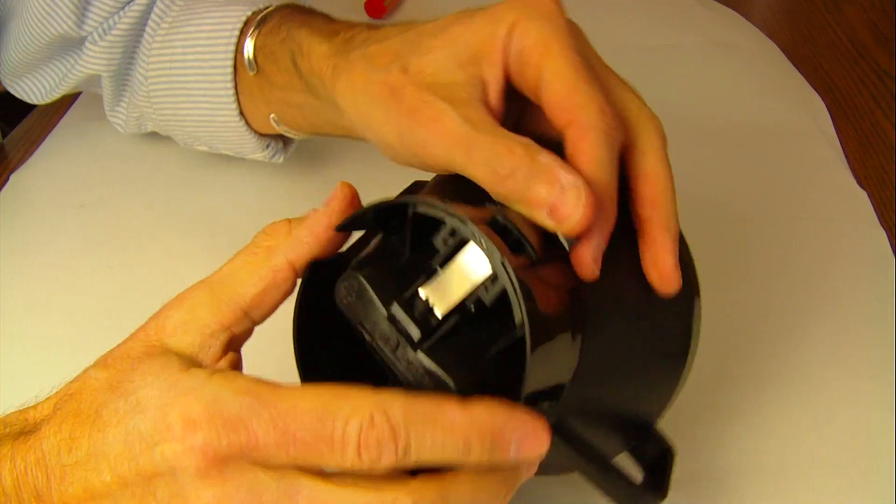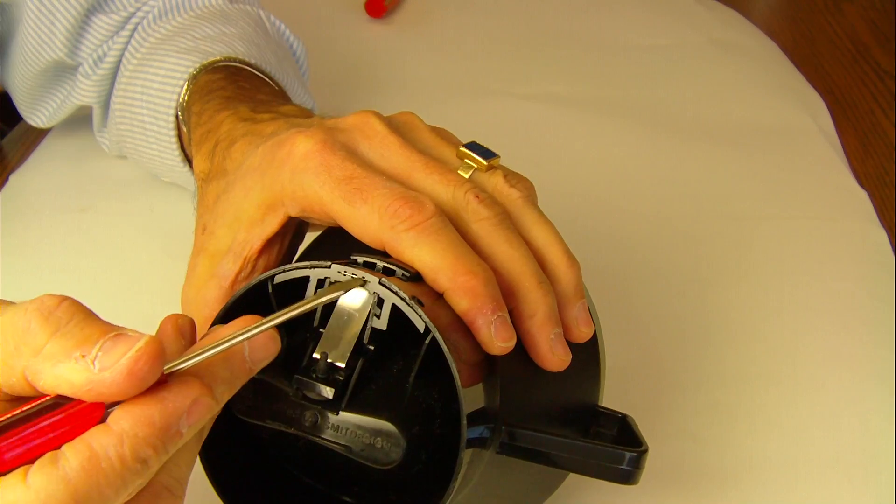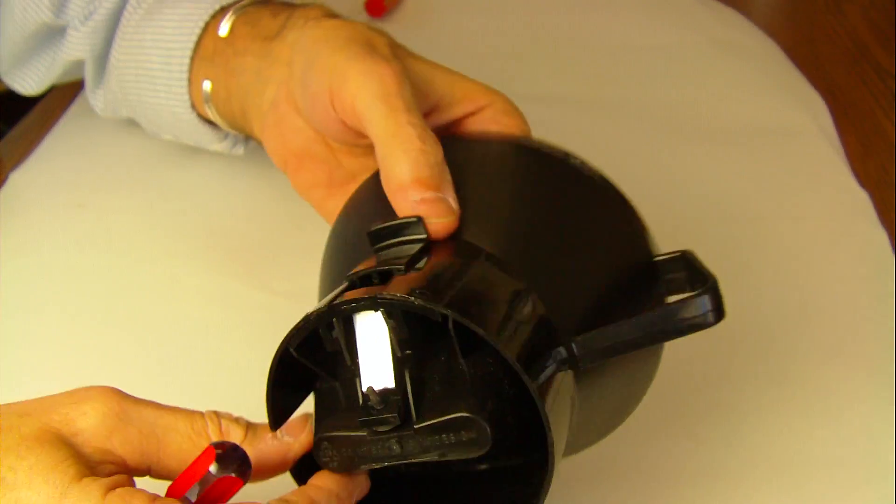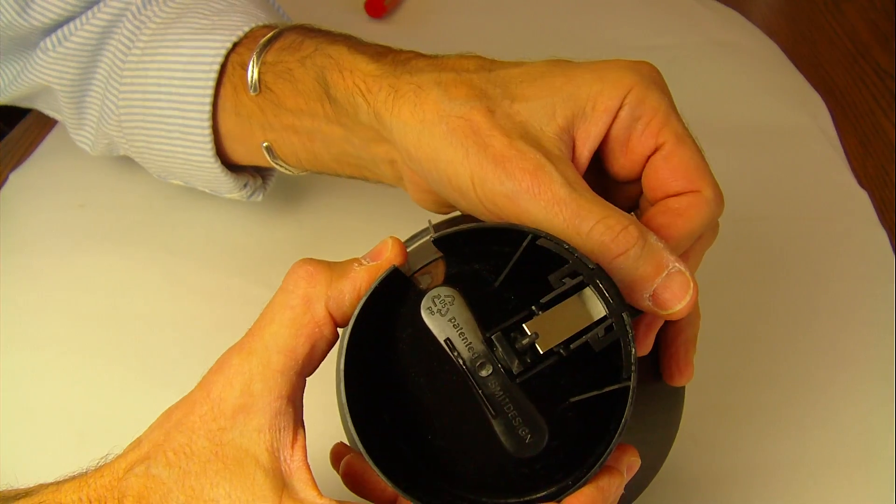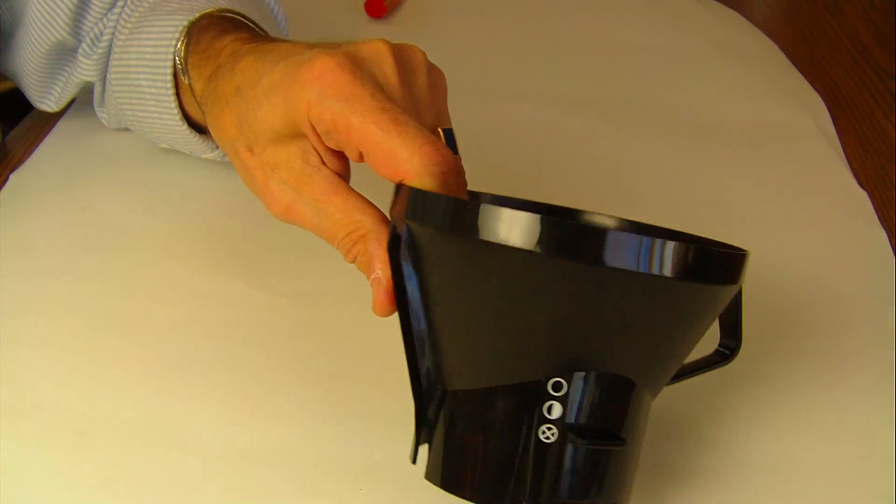And now you can see that the pin you lost, the long end is visible from the outside. And the switch, once again, opens and closes as it should. And that's about it.